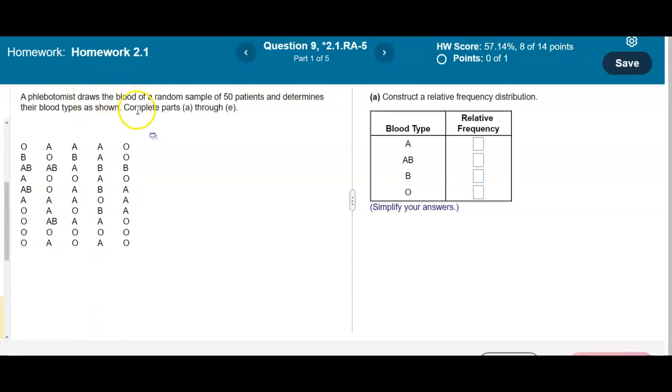A phlebotomist draws the blood of a random sample of 50 patients and determines their blood types as shown. We want to complete parts A through E.